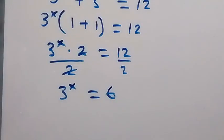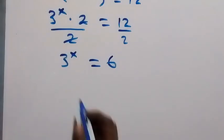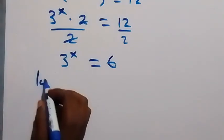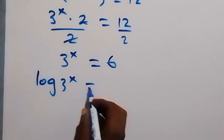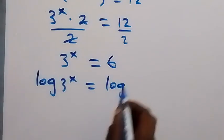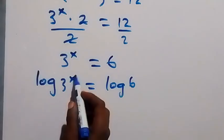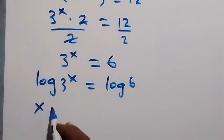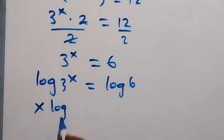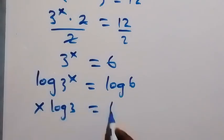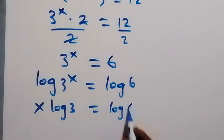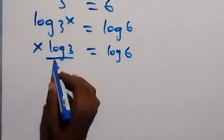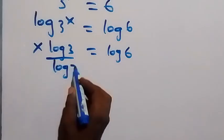From here now we take the log on both sides and we have log 3^x = log 6. Then from the law of logarithms, we can take this x to the back. We have x log 3 = log 6.